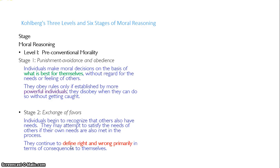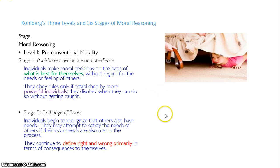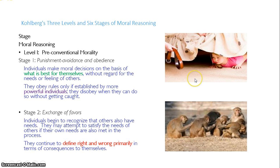Right or wrong is primarily described in terms of the consequences to oneself. If I can do something and not be punished or get away with it, that is what determines right or wrong. In stage two — the exchange of favors — individuals begin to recognize that others also have needs, and they may attempt to satisfy others' needs if their own needs are satisfied in return. 'You scratch my back, I'll scratch yours.' They will make decisions for others if their own needs will be satisfied in return — an exchange of favors.